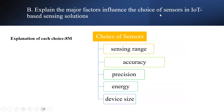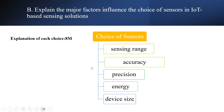Explain the major factors influencing the choice of sensors in an IoT-based sensing application. You should explain why there is a consideration required when designing a sensor for a particular application. Start by explaining what applications use sensors and how a sensor should be designed for a particular application. Then list the major considerations: sensing range, accuracy, precision, energy, and device size — explaining how each should be defined, whether the size should be minimal or large scale. This carries a total of 8 marks.